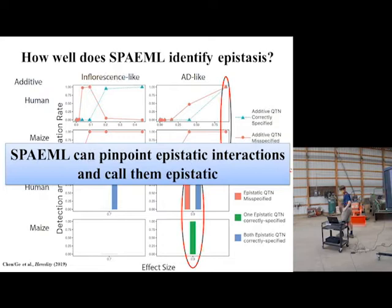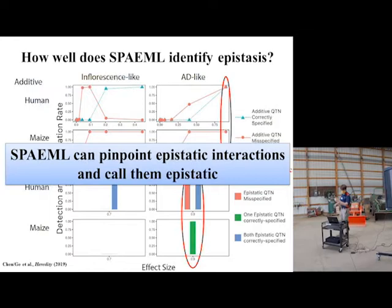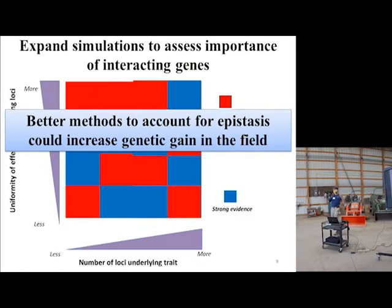Moreover, these results that I just circled here are showing that even if we have a particular DNA marker that has both an interaction effect and a main effect, SPAML is able to distinguish between those two genetic signals. So this means that SPAML can pinpoint epistatic interactions and call them epistatic. Our original hypothesis is that the gap in the importance of epistasis is because of inadequate statistical models. Perhaps SPAML is a good step in the right direction, but we don't know for sure.